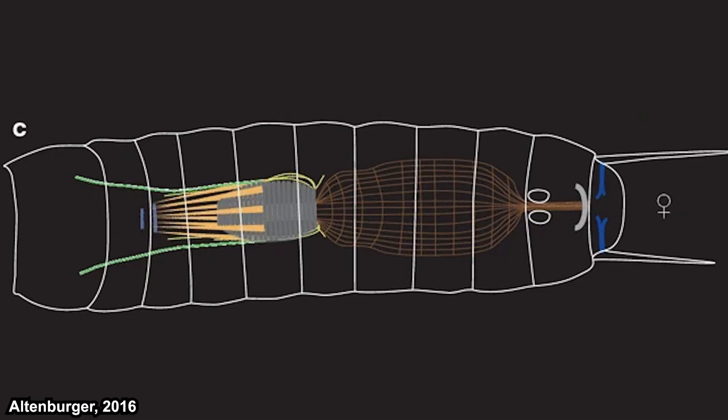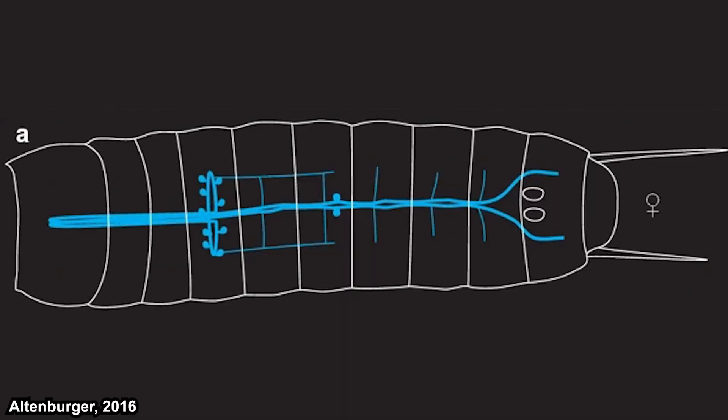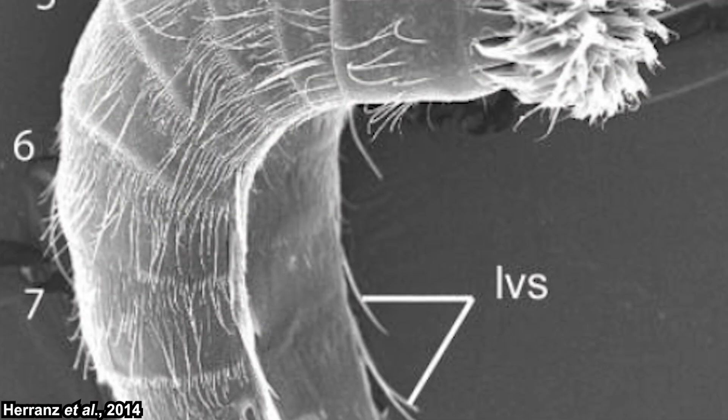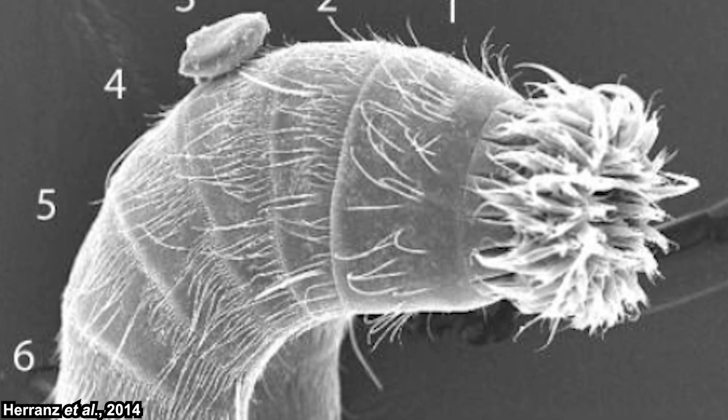Their digestive tracts are relatively straight and simple, so they most likely don't have an exceptionally unique way of digestion. They do have a nervous system, with a ventral nerve cord along their body and a neuropil ring in front of their pharynx. The spines or spicules on their body serve as sensory organs, including their scalids. Some species have ocelli on their head, or at least a structure that resembles ocelli, which would function as visual sensory organs — though there is not enough research on this.